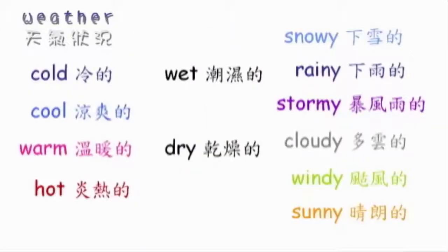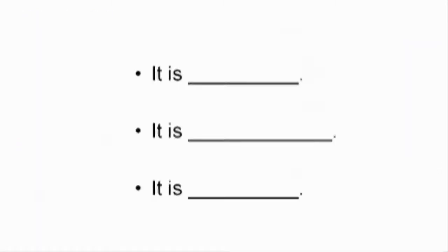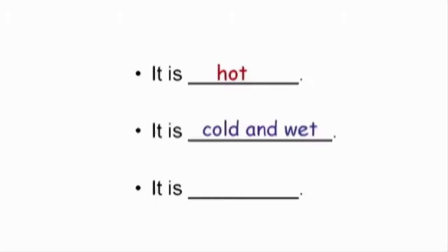現在讓我們看看要怎樣使用這些單字。再看一眼剛剛形容溫度、濕度還有天氣狀況的這些形容詞。當有人問你今天天氣怎麼樣時：'How is the weather today?' 你可以回答今天很熱：'It is hot.' 或者是今天又濕又冷：'It is cold and wet.' 或者你可以使用天氣情況，例如陰天：'It is cloudy.'